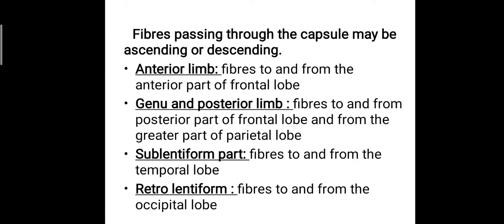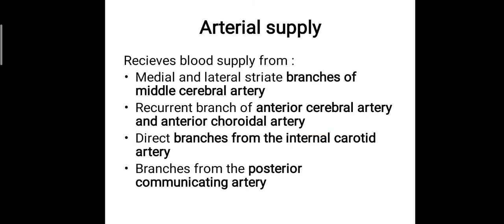The arterial supply of the internal capsule comes from the medial and lateral striate branches of the middle cerebral artery. Additional supply comes from the recurrent branches of the anterior cerebral artery and the anterior choroidal artery, direct branches from the internal carotid artery, and branches from the posterior communicating artery. These are the major branches supplying the different parts of the internal capsule.